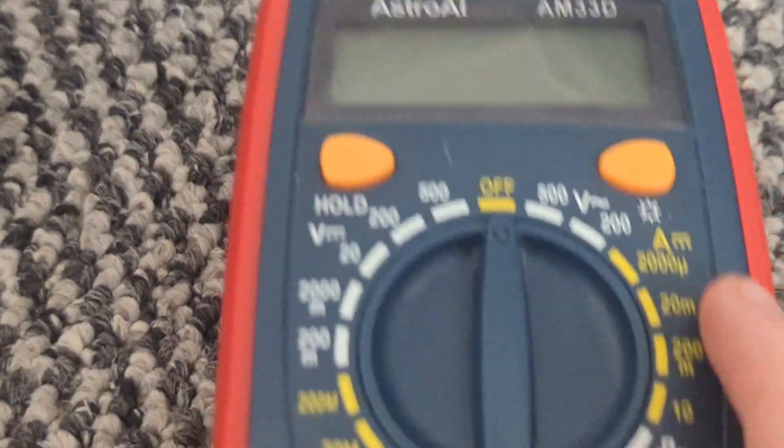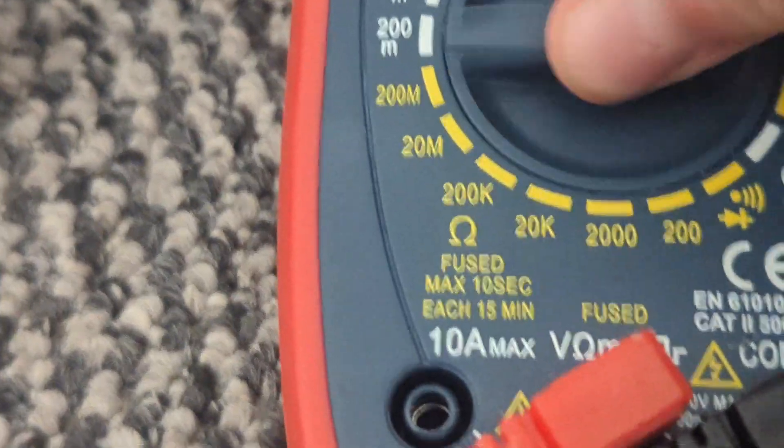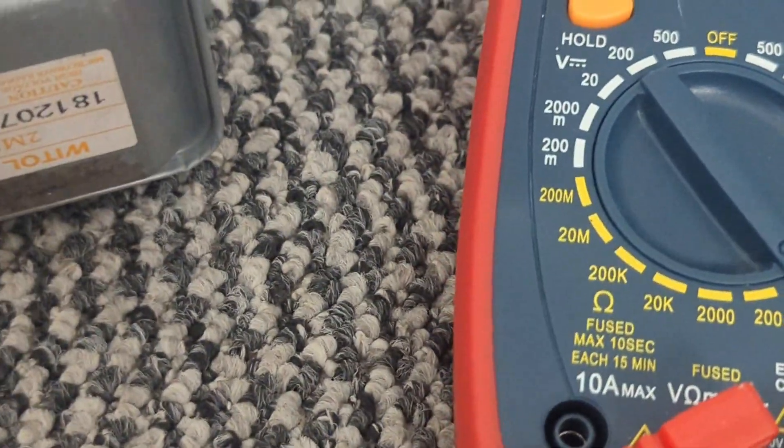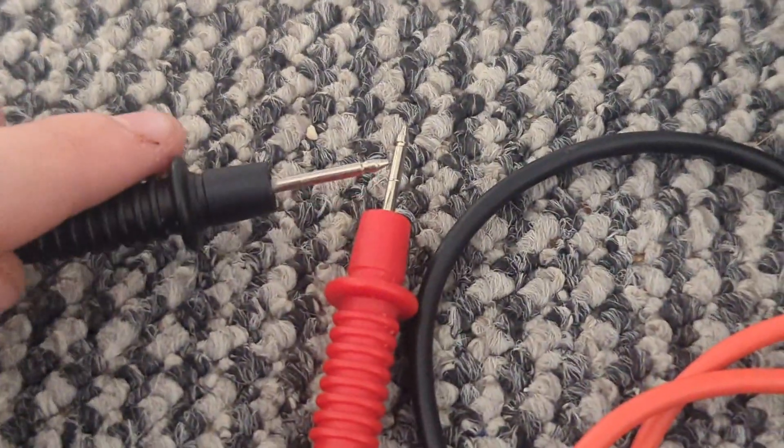So first you're going to want to get your multimeter, if you have one, and set it to your continuity setting. And basically that means if you touch it will make a noise.